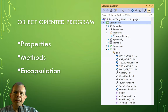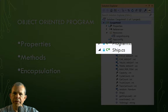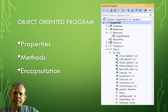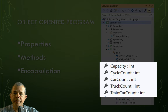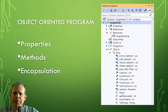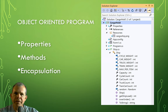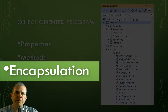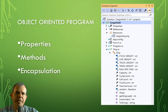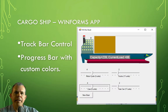Here are some details of what we'll explore in our object-oriented programming lessons. We have an object — really a class — called Ship. The Ship class has several properties: capacity, cycle count, car count, truck count, and train count. It will have methods at the bottom to get the ship load, check if it's over or under loaded, and a ToString method. We're going to focus on one of the four pillars of OOP called encapsulation. We'll also make two versions of the application to demonstrate how a class can be imported into more than one program.